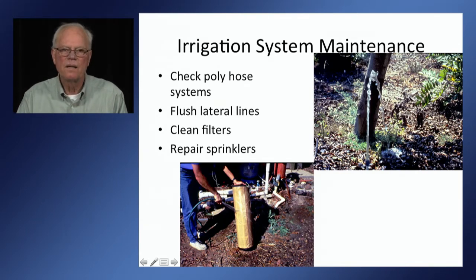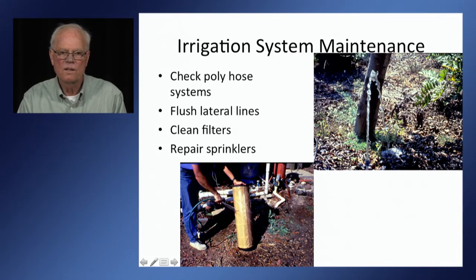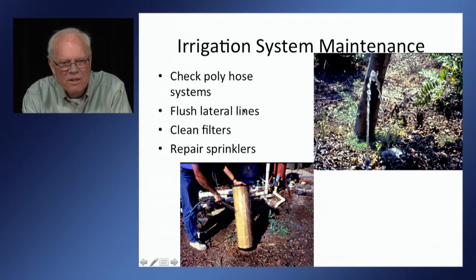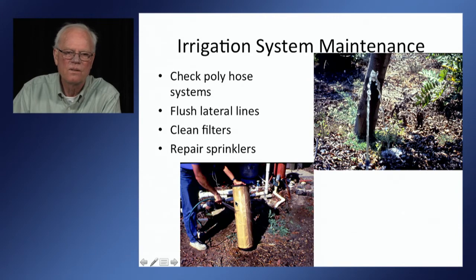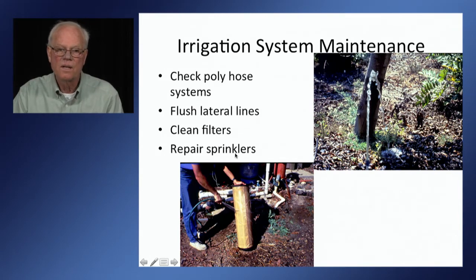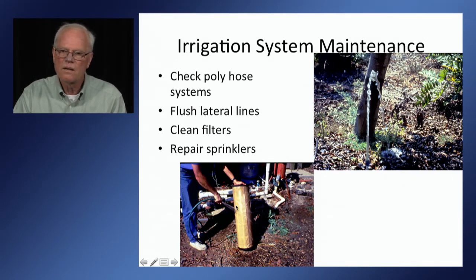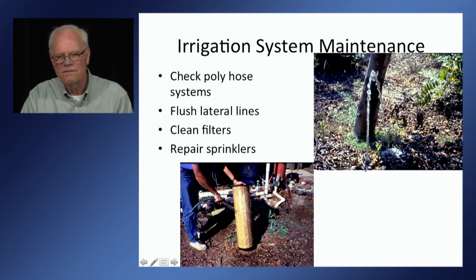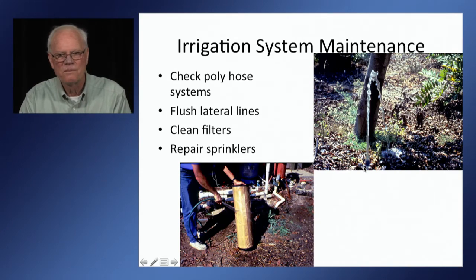Irrigation system maintenance is essential — check poly hoses where damage has occurred. Flush the lateral lines. Even with the best filtration, you do get eventual sediment appearing in the lines, and the only way to prevent clogging of the emitters is by flushing. Clean filters and repair sprinklers. It's not uncommon to go out to an orchard and find sprinkler lines buried under leaf drop and roots — that's a clear indication that system maintenance is not being done.